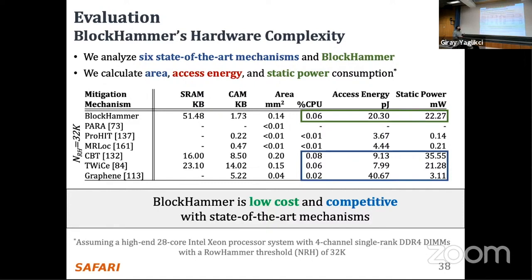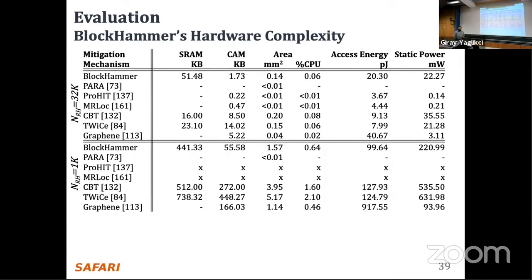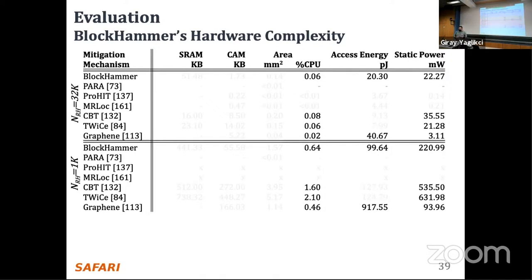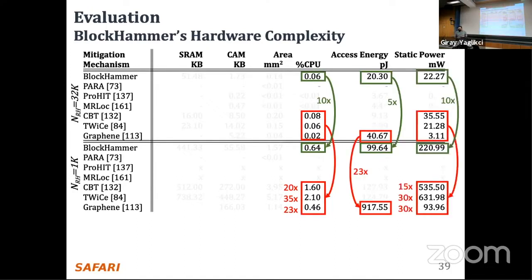We observed that BlockHammer can be considered a low-cost mechanism and is competitive with state-of-the-art counter-based mechanisms such as CBT and Graphene. To understand how hardware complexity scales with worsening Rowhammer vulnerability, we repeat the analysis for a Rowhammer threshold of 1K — a future-looking analysis, since no characterized chip has reached that threshold yet. We observe that BlockHammer's hardware complexity scales more efficiently than state-of-the-art Rowhammer mitigation mechanisms.